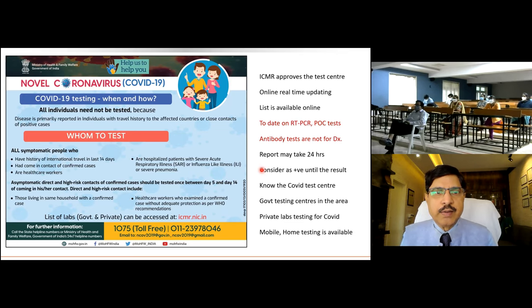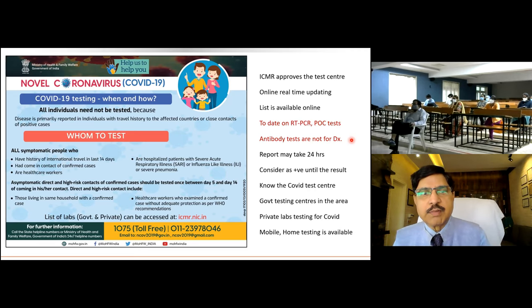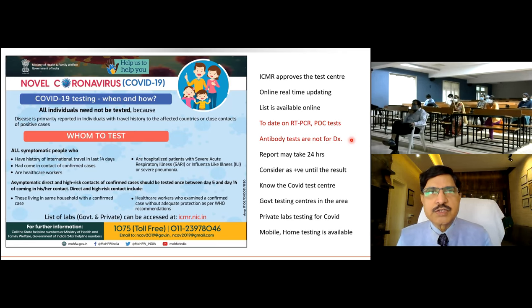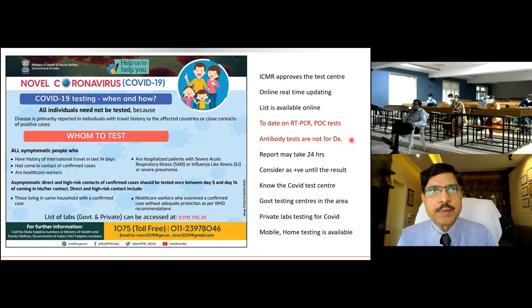ICMR approves several test centers and updates results online in real time. RT-PCR and point-of-care tests are available, along with antibody tests that are not diagnostic. The report may take 24 hours; consider the patient positive until the result arrives. Government and private labs are empowered, and mobile vans, home testing, and campus camps are available. In large apartment complexes of around 13,000 people, testing has been conducted free of cost.